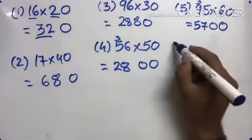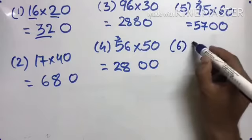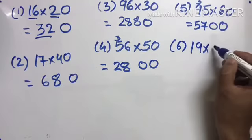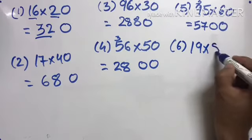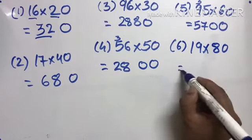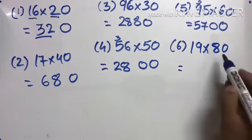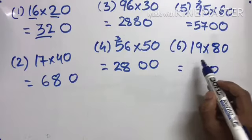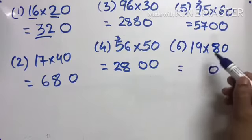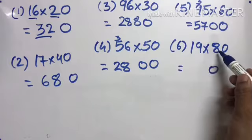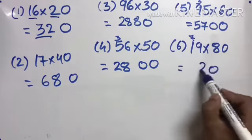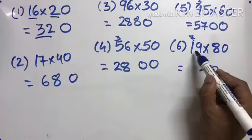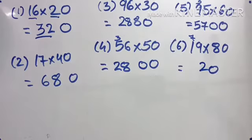19 multiplied by 80. One zero. If you know 19 times 8, then do it. If not, simple way: multiply 19 and 8. 8 times 9 is 72, carry 7. 8 times 1 is 8 plus 7 is 15. 1520. Understood?